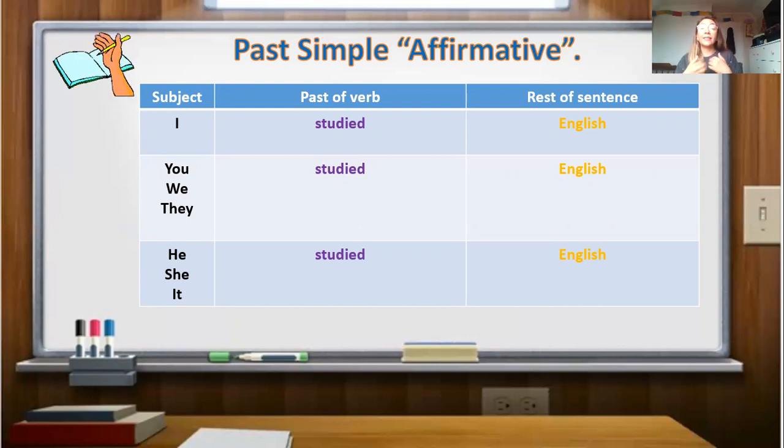So, it would be for example, I studied English. Yo estudié inglés. You studied English. Tú o ustedes estudiaron inglés. He studied English. Él estudió inglés. One more time, I need you please open your English copybook. Te voy a pedir nuevamente que abras tu cuaderno de inglés, y escribas el título, Past Simple Affirmative, y copias este pequeño cuadrito gramatical de la estructura del pasado simple. Tómate tu tiempo, y cuando estés ready, continuamos.